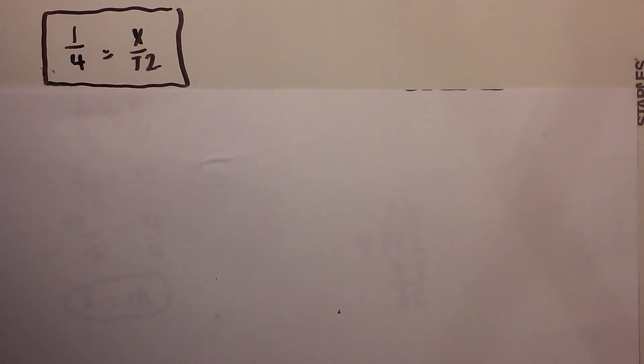In this video we're going to show how to solve proportions. So we have a proportion here: 1/4 is equal to x over 72.